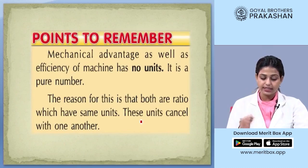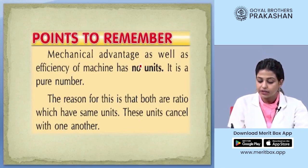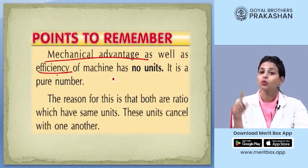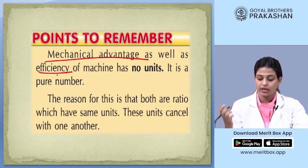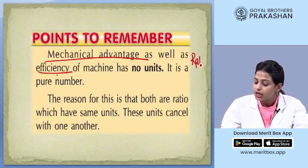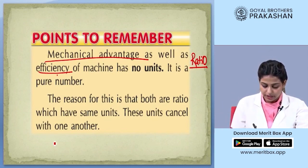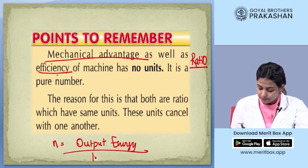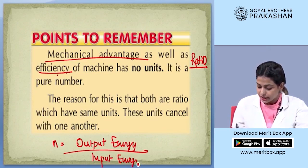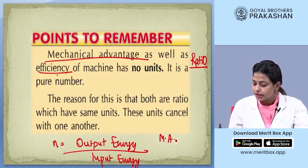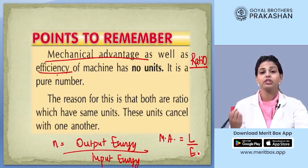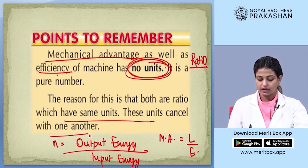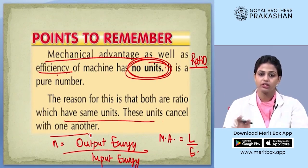There is one last thing to remember: mechanical advantage as well as efficiency both have no units. Why do they have no units? Both are simply ratios. One is the ratio of output energy to input energy, and the other is the ratio of load upon effort. Since both are ratios, they have no units. That is why we take them without any units.